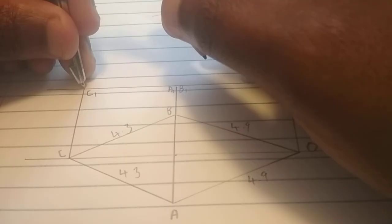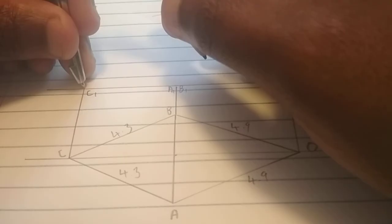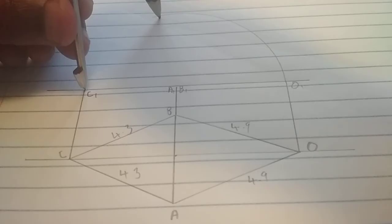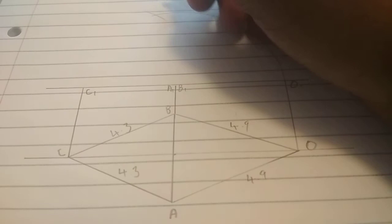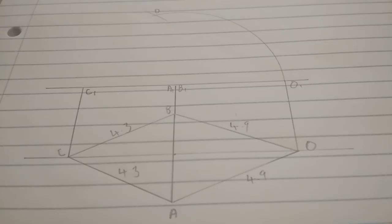We're going to put it on C. Because C represents the other part of the leg. And then, draw the arc. Just like that. Where they meet, that becomes our O.